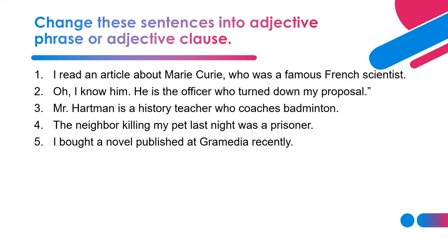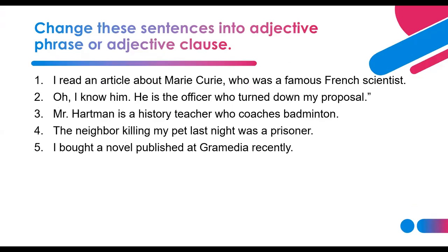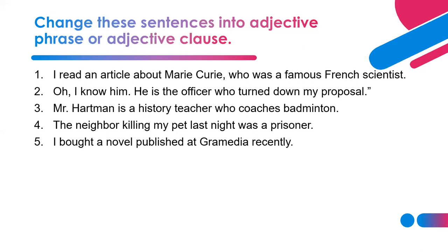Number four: 'The neighbor who killed my pet last night was a prisoner.' Is 'killed' past tense? Yes — because of 'last night.' So the adjective clause 'who killed my pet last night' uses past tense. Change to adjective phrase: 'The neighbor killing my pet last night was a prisoner.' Wait — since it is past tense active, we still change to -ing: 'The neighbor killing my pet last night was a prisoner.'